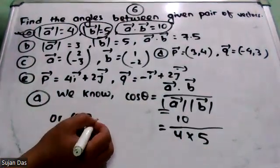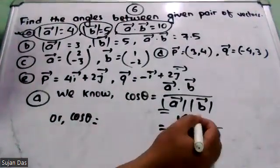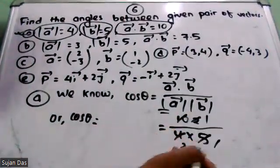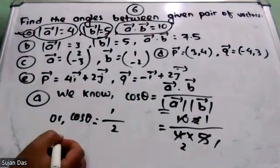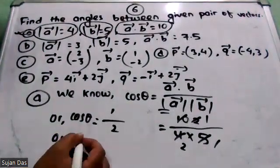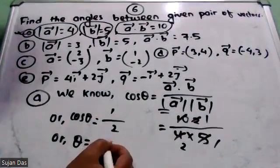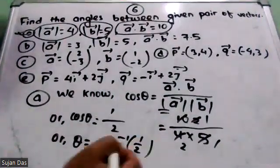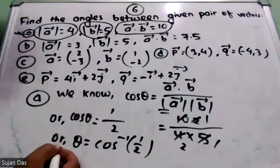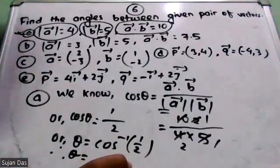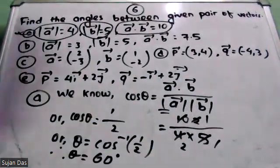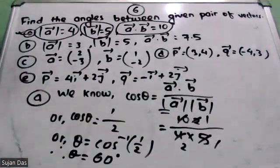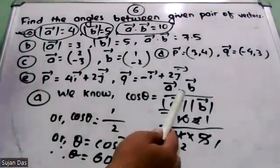So cos theta equals: 5 into 1, 5 into 2, right? So 2 into 1, 2 into 2. This will be 1 by 2, right? Theta equals cos inverse 1 by 2. So cos inverse 1 by 2. Theta equals 60 degrees. This will be the angle between the 2 vectors.